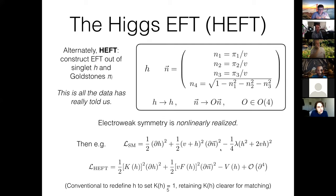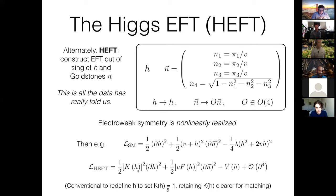In the general HEFT EFT, up to two derivatives, you have the two-derivative term for the real scalar H, which can have some arbitrary function of H dressing it. There's also the two-derivative term for the Goldstones, which can have some arbitrary function of H dressing it. Then we can construct a potential for H and higher derivative terms. It's conventional in some contexts to redefine H itself to absorb this cofactor K, giving it canonical kinetic terms. But if you're doing a matching calculation, keeping track of this factor is appropriate.